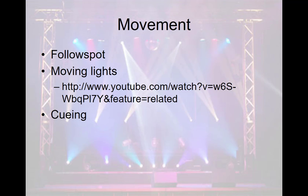Movement is another controllable quality of light. Basic follow spot operation: you turn on a light, point it at an actor, and follow that actor around. Moving lights are also common — someone programmed moving lights to play along with music, posted to Moodle. Cueing is another way to show movement — turning on one light and turning off another in conjunction creates apparent movement.